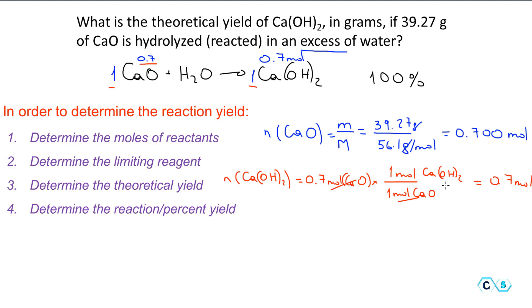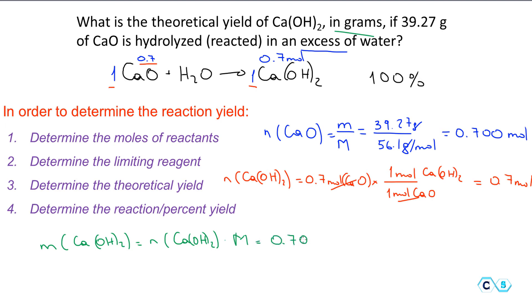We can produce 0.700 moles of calcium hydroxide, but the question asks for grams. The mass of calcium hydroxide equals the moles times its molar mass: 0.700 moles × 74.1 grams per mole. The moles cancel, giving us 51.87 grams, which rounds to 51.9 grams of calcium hydroxide. This is the theoretical yield of this reaction.